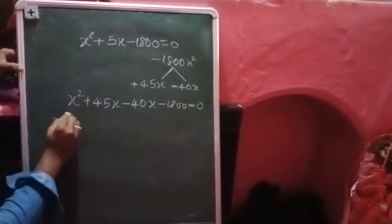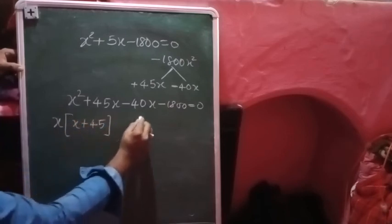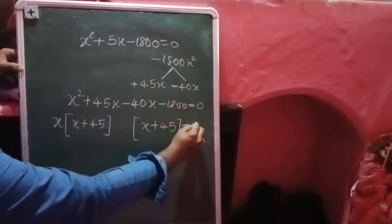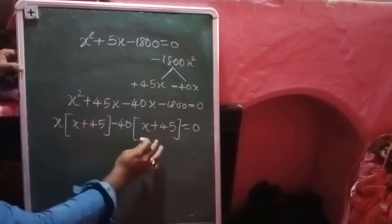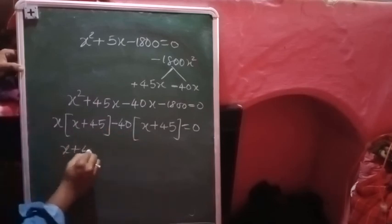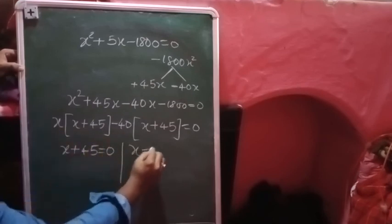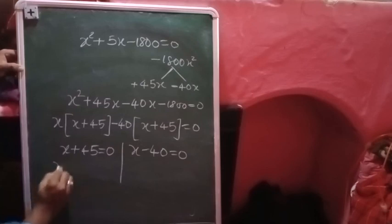Then take common: x plus 45. Here common minus 40. Then observe these two are same, right? One time x plus 45, which equals to zero. This is x minus 40, which equals to zero. This becomes minus 45, reject this. This becomes x equals to 40.